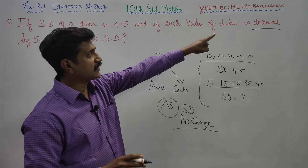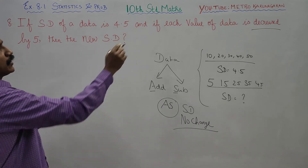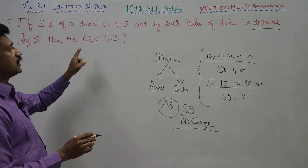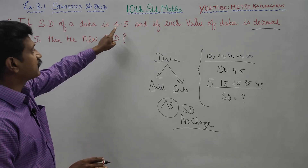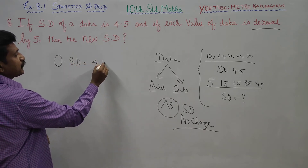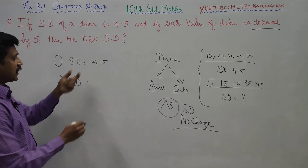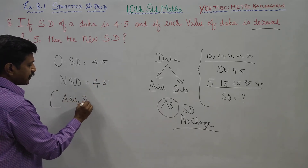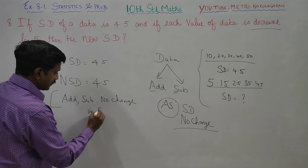Standard deviation is no change when you add or subtract. If you decrease the data, the rule is: if each value of the data is decreased by 5, there is no change in standard deviation. The answer is 4.5. The old standard deviation is 4.5 and the new standard deviation is also 4.5, because addition and subtraction cause no change in standard deviation.